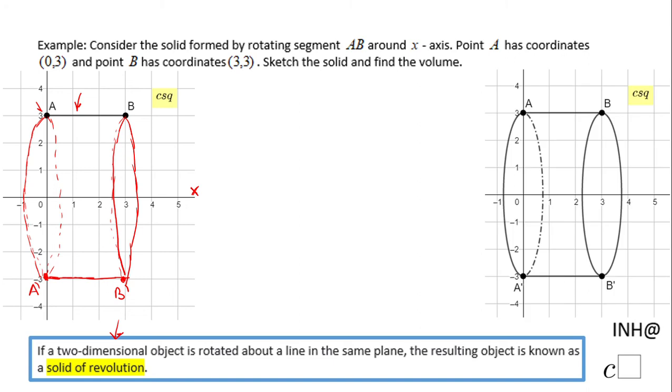Now we're going to look at the volume of this cylinder. The volume of a cylinder is πr²h. In this case, the radius will be this segment, which is 3 units, and the height will be A prime B prime, which is also 3 units.